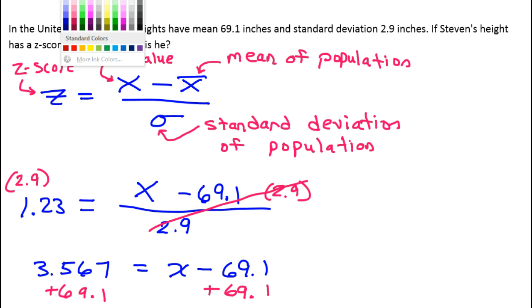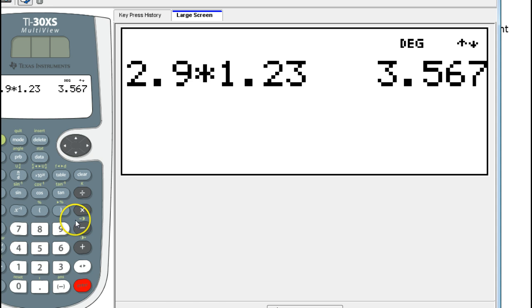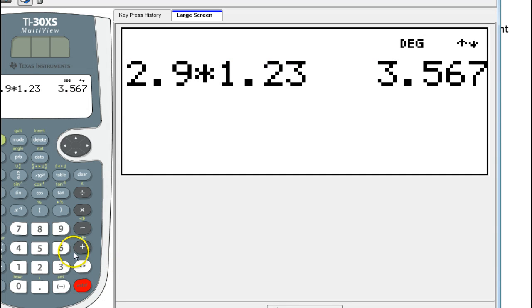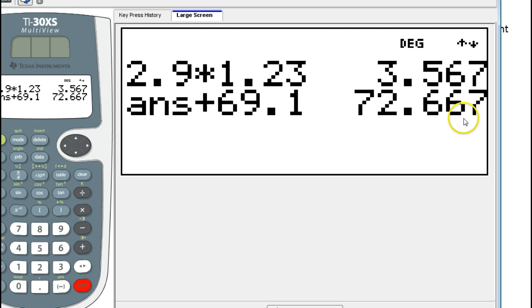So that should give us our final answer. Okay, look, the 3.567 is already in there. So I'm just going to do plus 69.1. So plus 69.1. Boom! 72.667.